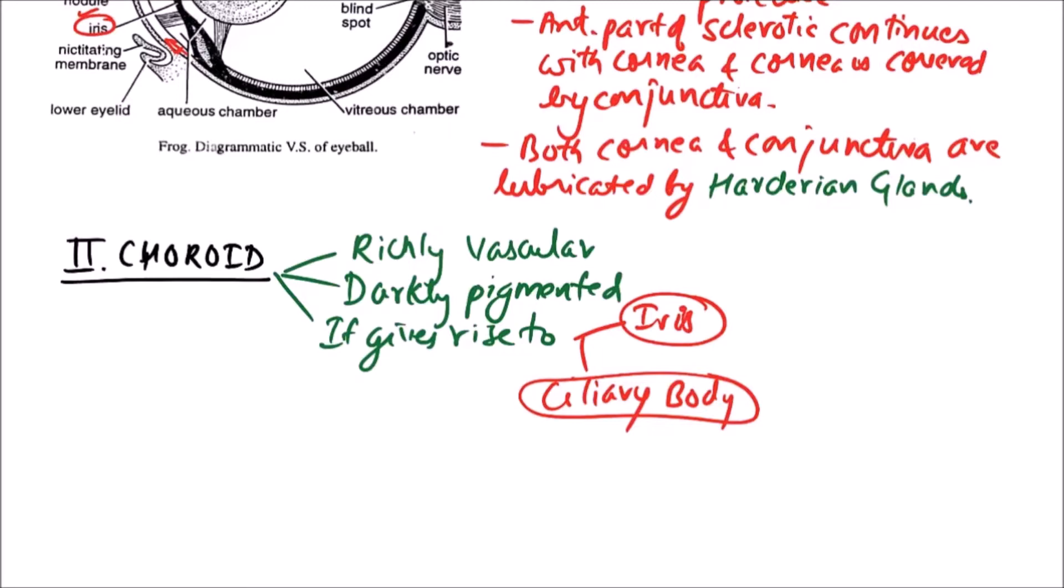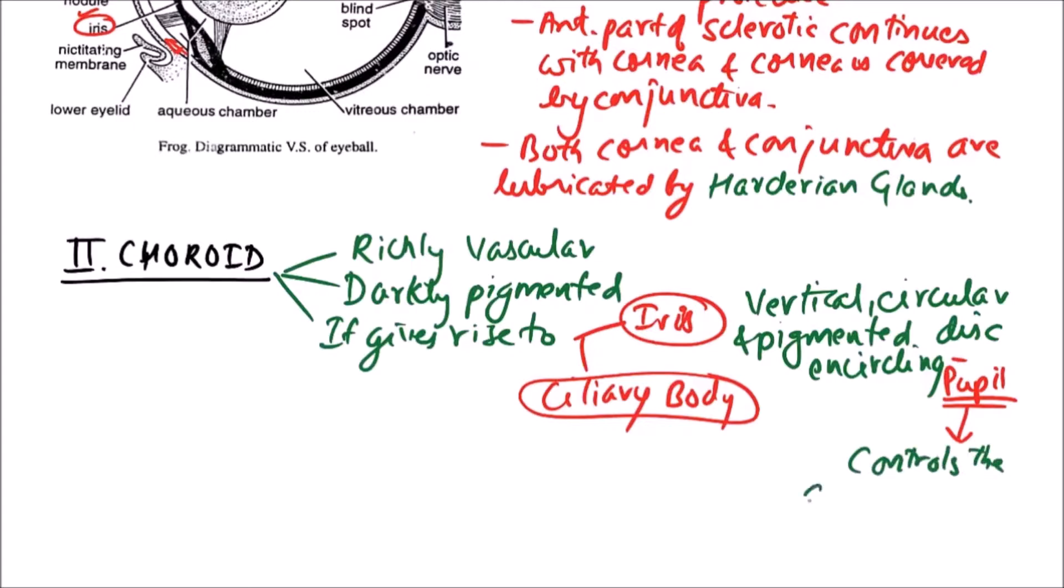First one is iris. Iris is a vertical circular and pigmented disc encircling pupil. Pupil is a cavity which is present in between the iris. By this pupil, iris controls the amount of light entering the eyes.